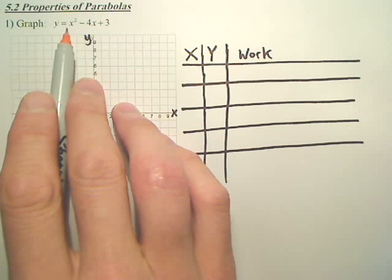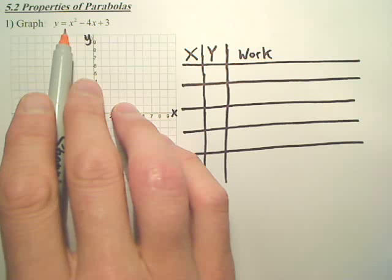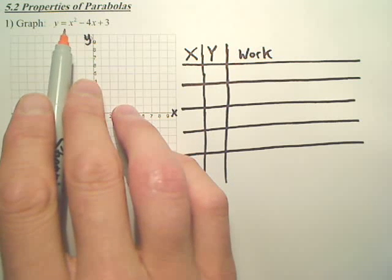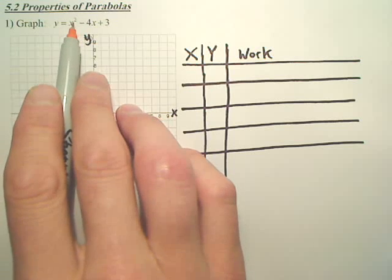But it has an x squared. Squared. Squares have four sides. We call it a quadratic. Basically, parabolas come from quadratics. Quadratics are equations with squares.